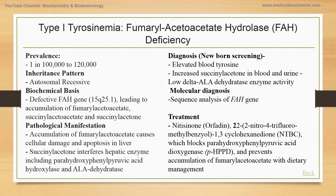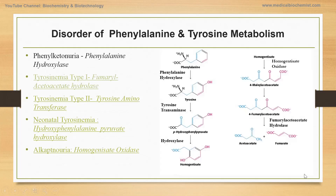The treatment of type 1 tyrosinemia includes nitisinone, also known as NTBC, which blocks parahydroxyphenylpyruvate dioxygenase and prevents accumulation of fumarylacetoacetate, along with dietary management. Essentially, this treatment prevents the formation of fumarylacetoacetate by inhibiting the upstream pathway, blocking the formation of homogentisic acid.